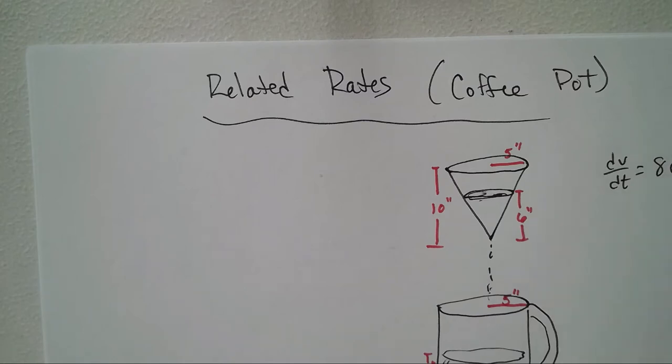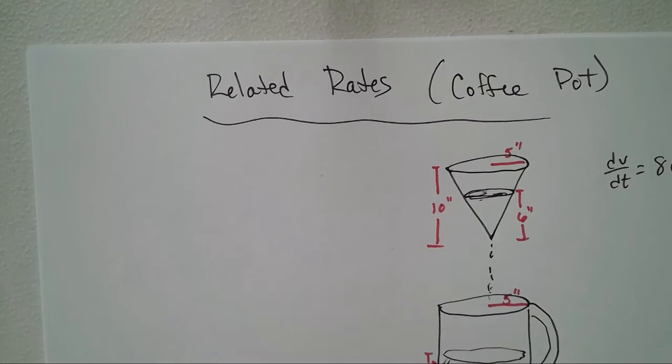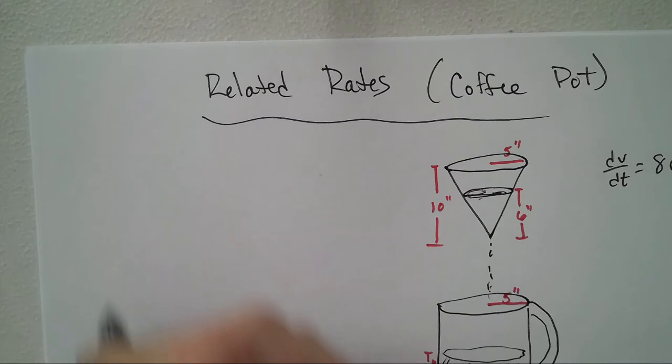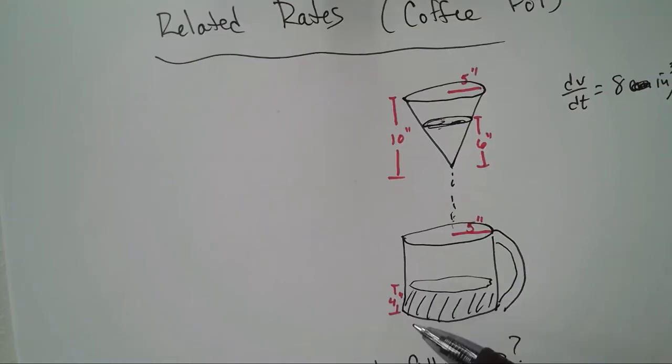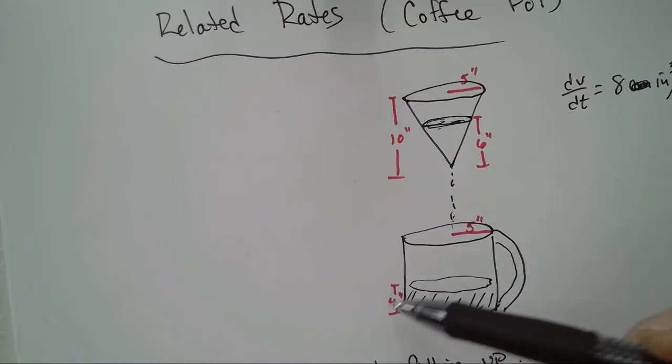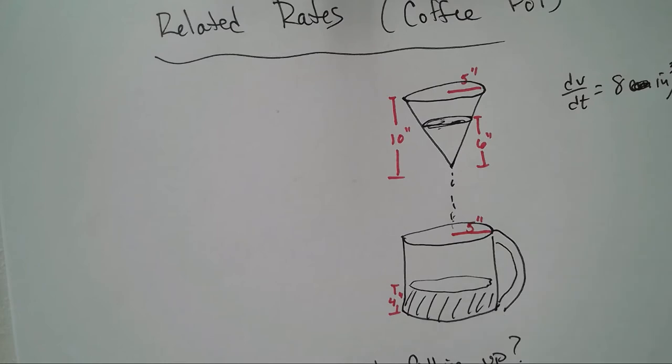Okay, so question number one: how fast is the pot filling up at those? So I know that this is four inches but that's a variable right there. I know that this is six inches, that's a variable. So this is going down, that's going up. How fast is that increasing at this point?